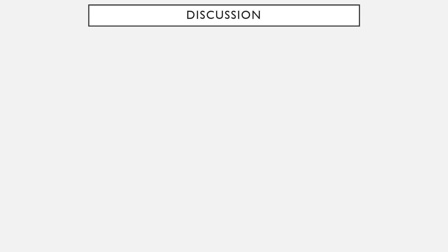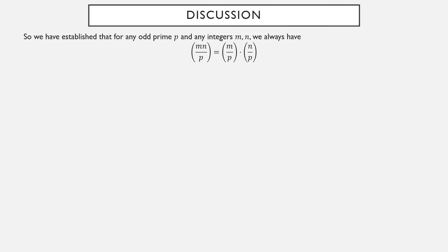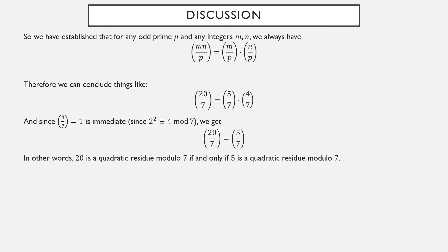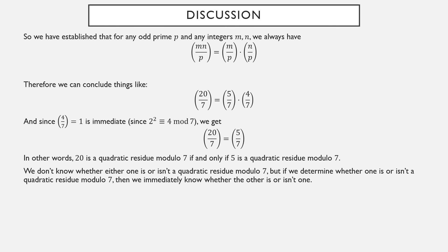So let's talk about what we've done so far. For any odd prime p and integers m and n, the Legendre symbol is completely multiplicative: the Legendre symbol mn over p factors as the Legendre symbol m over p times the Legendre symbol n over p. For example, the Legendre symbol 20 over 7 equals the Legendre symbol 5 over 7 times the Legendre symbol 4 over 7. Since 2² = 4, four is definitely a quadratic residue mod 7, so the Legendre symbol 4 over 7 equals one. Therefore the Legendre symbol 20 over 7 equals the Legendre symbol 5 over 7. Neither is zero since 7 divides neither 20 nor 5, so either both equal one or both equal minus one — meaning 20 is a quadratic residue mod 7 if and only if 5 is.